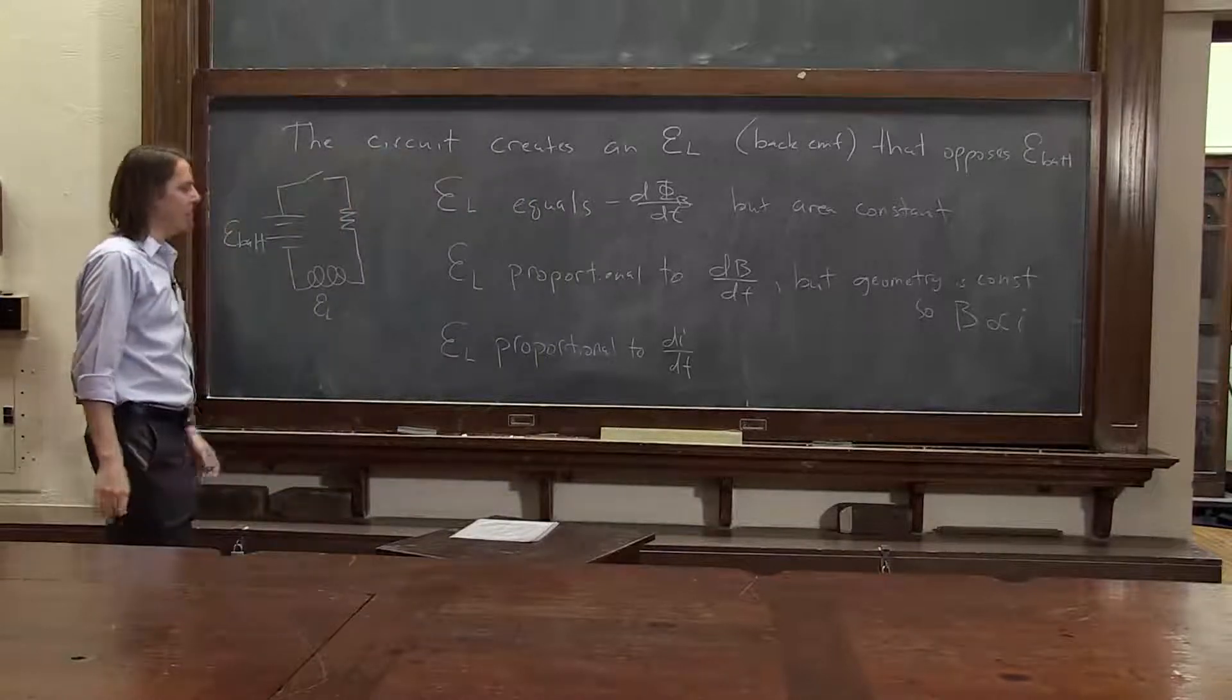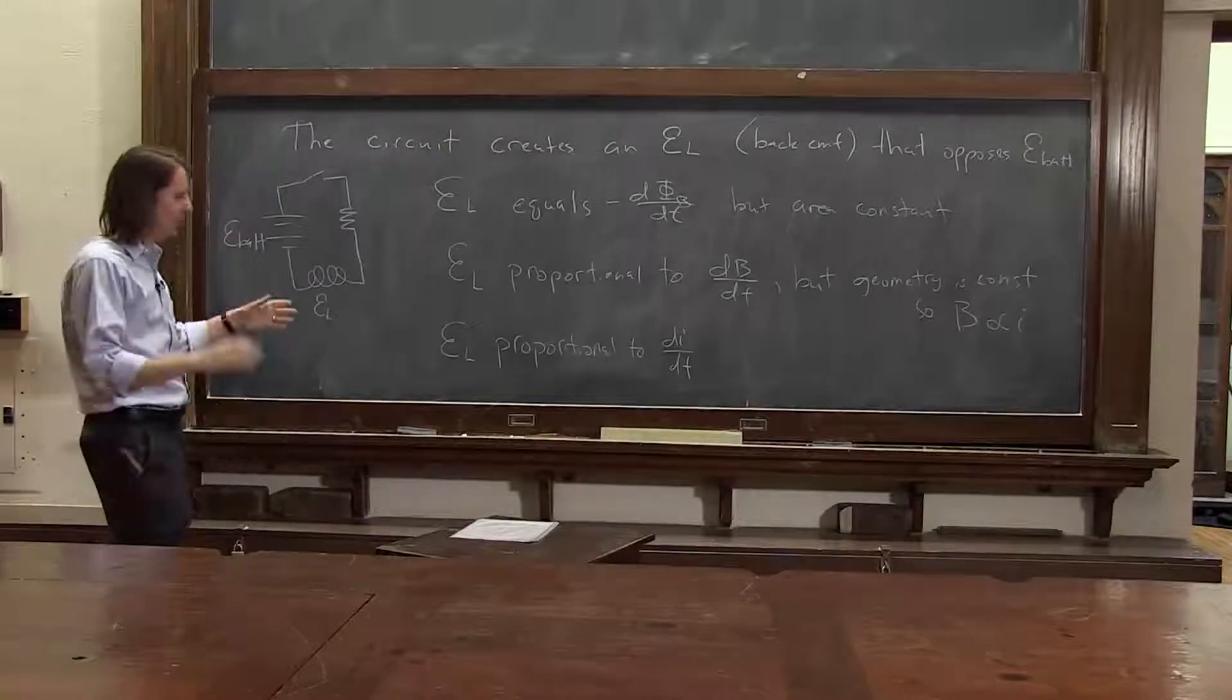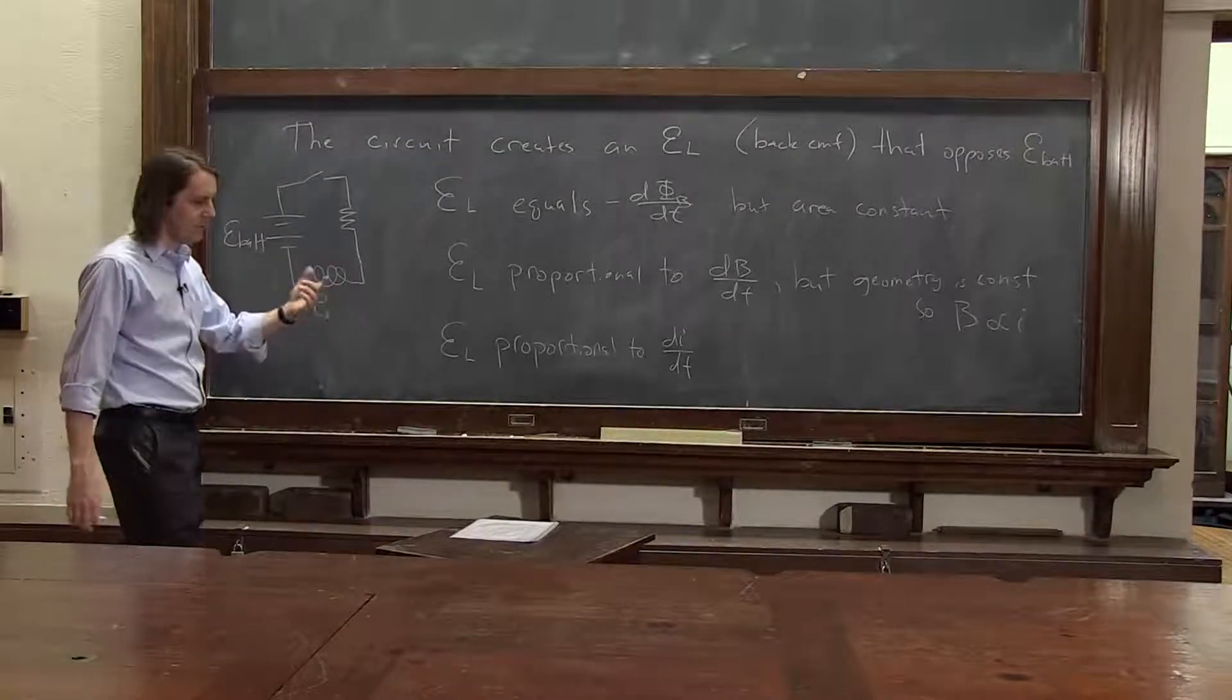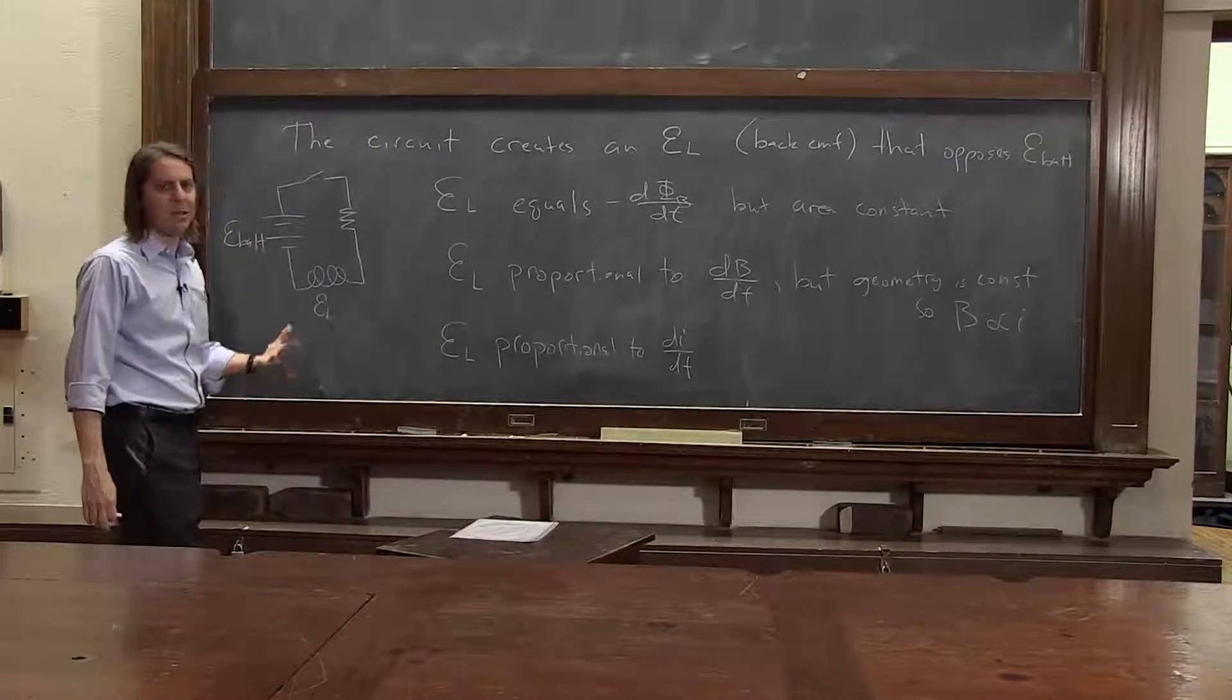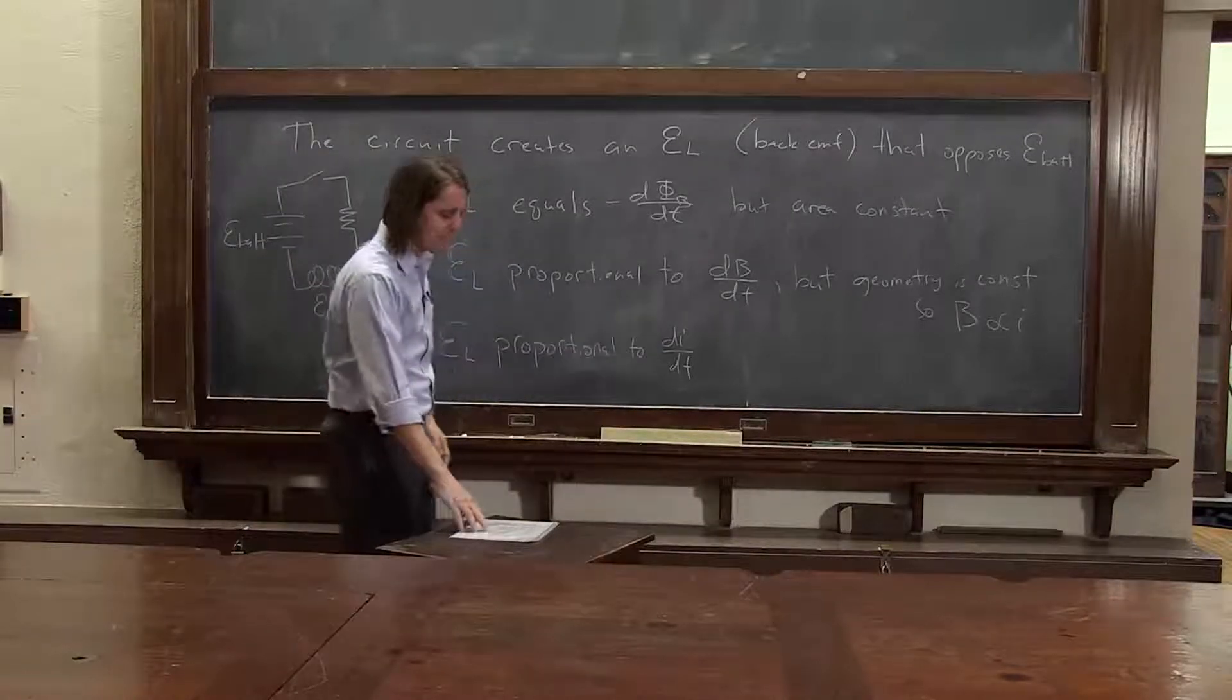When we apply Faraday's law to a circuit, we throw out all the details. We just say, no, this EMF is proportional to dI dt, and dI dt is something we care about, right? That's the change in the current. Now we're talking about something that you analyze when you think about currents.